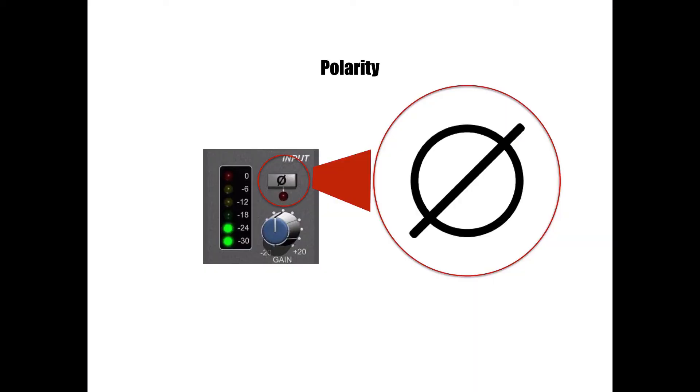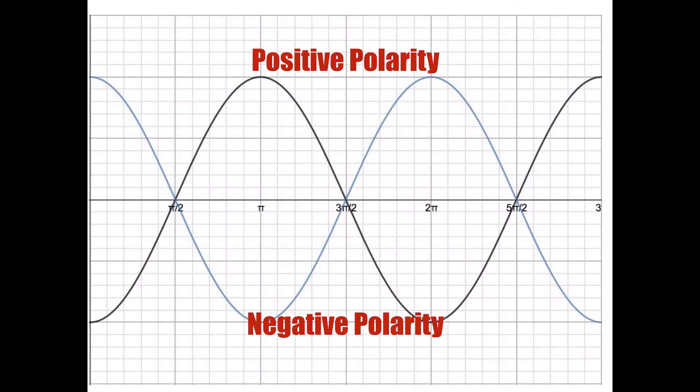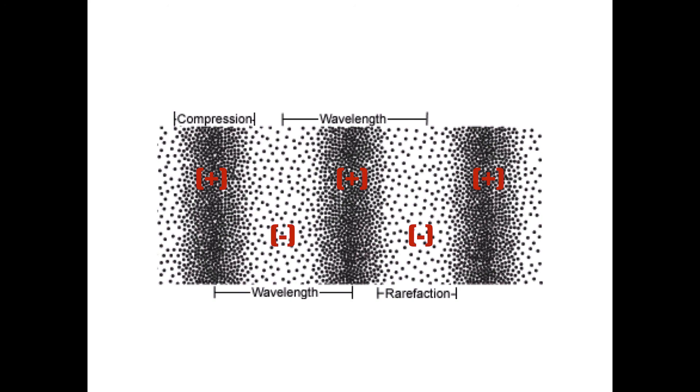So there is a very common misconception about the terms polarity and phase. I'm sure you have seen this button, either on software, hardware processors, or consoles. This is the polarity flip switch, and it flips the polarity of a sound when it's engaged. Polarity is often confused with phase because they do have some relation. The polarity of a waveform describes the part of the cycle the waveform is in, positive or negative. Is the waveform in the compression stage or the rarefaction stage?